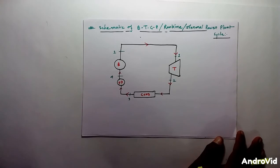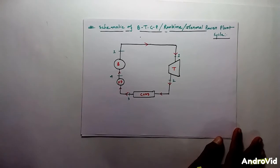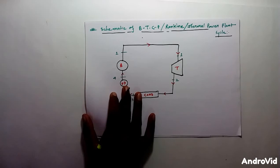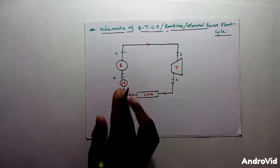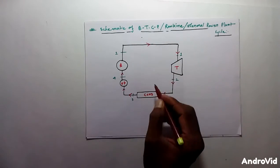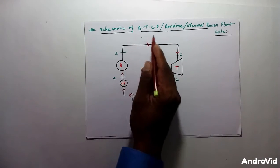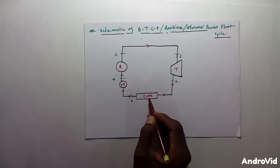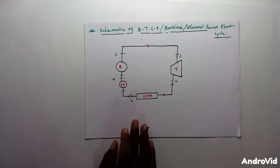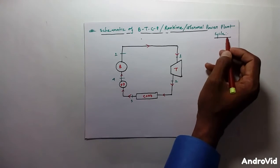Hello friends, this is Deepak Sharma from Fund of Mechanical Engineering on YouTube. In this lecture I will discuss what is the Rankine cycle, or vapor power cycle. The Rankine cycle is also known as the BTCP cycle, where B stands for boiler, T stands for turbine, C stands for condenser, and P stands for feed pump. This is the thermal power plant cycle.